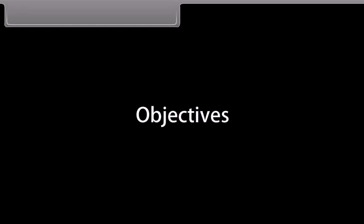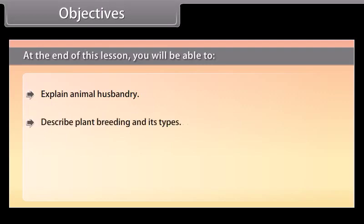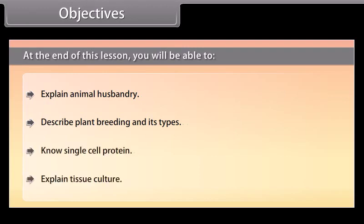Objectives. At the end of this lesson, you will be able to: explain animal husbandry, describe plant breeding and its types, single cell protein, and explain tissue culture.